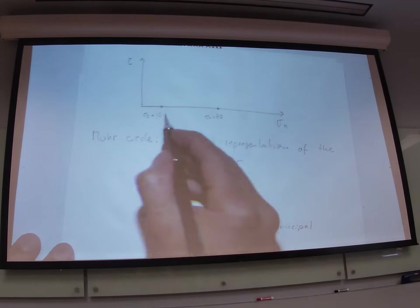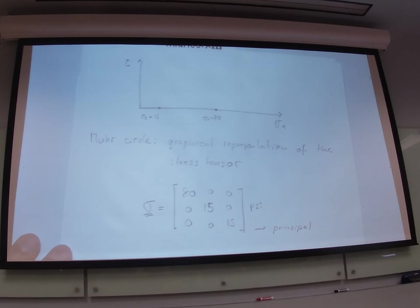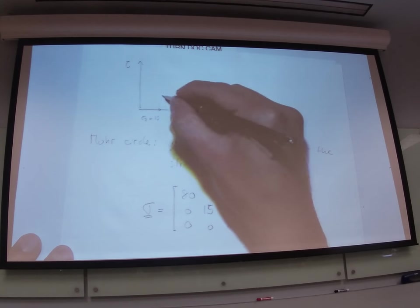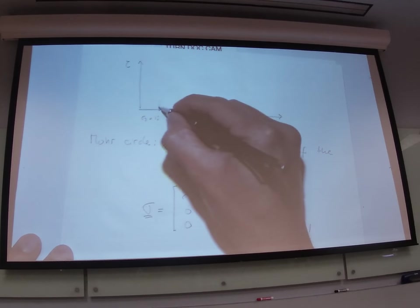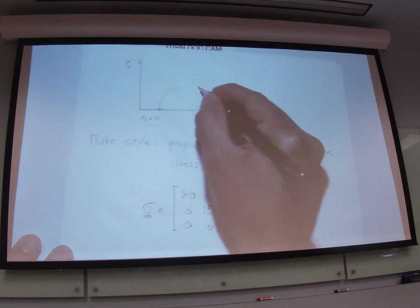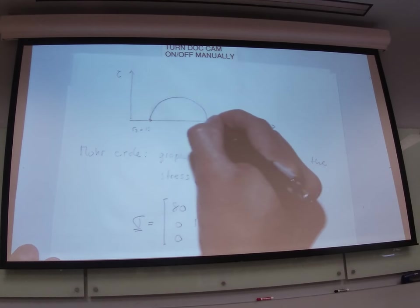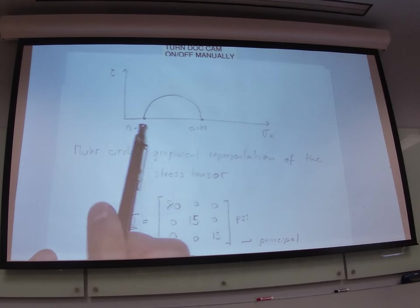Once you draw the principal stresses, the next step is just to draw a circle that goes as a center, at the center of those two points, and connects the principal stresses. So, what does the circle mean? Well, before we see what the circle means, let's try to understand what those points mean.